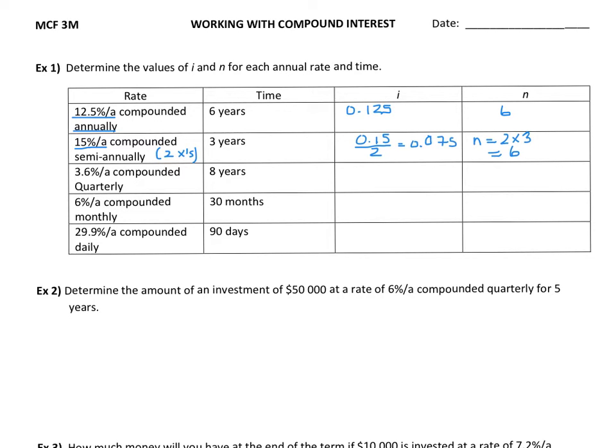The next one, it's compounding quarterly. That means four times per year. That's not an x, it's times.